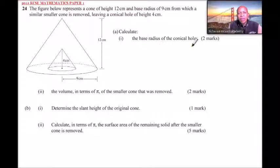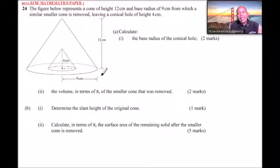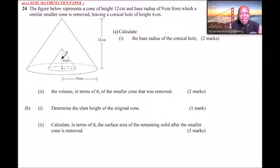To do this, let's start with the base radius of the conical hole — that is the radius we want to find. Using similarity and enlargement, we can see that the big cone and the small cone are similar, as we are told. When objects are similar, the ratio of corresponding sides gives you a constant.